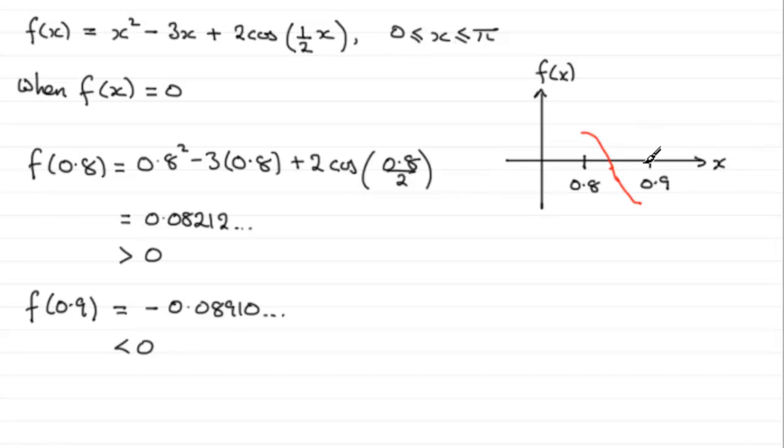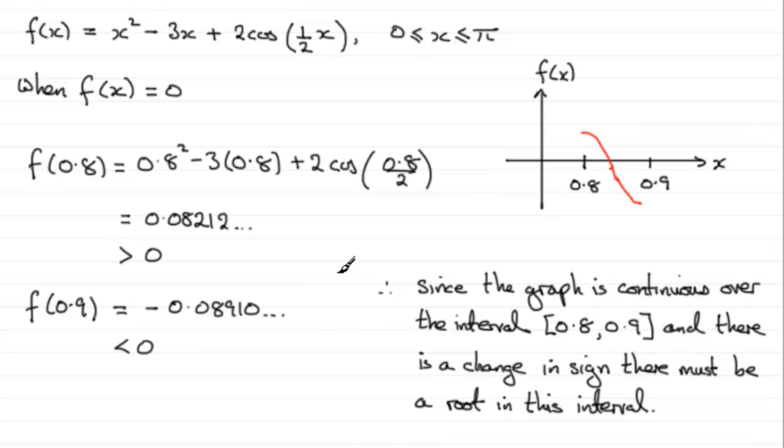So summarizing, we've got that therefore, since the graph is continuous over the interval [0.8, 0.9] and there is a change in sign, there must be a root in this interval. Notice by the way that we write intervals in square brackets like this.